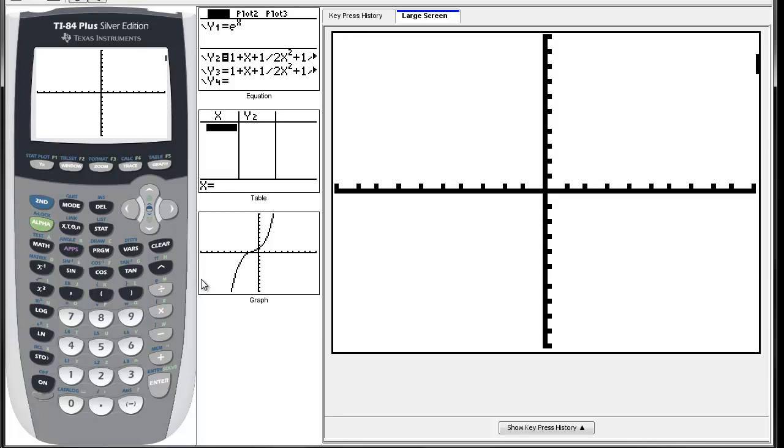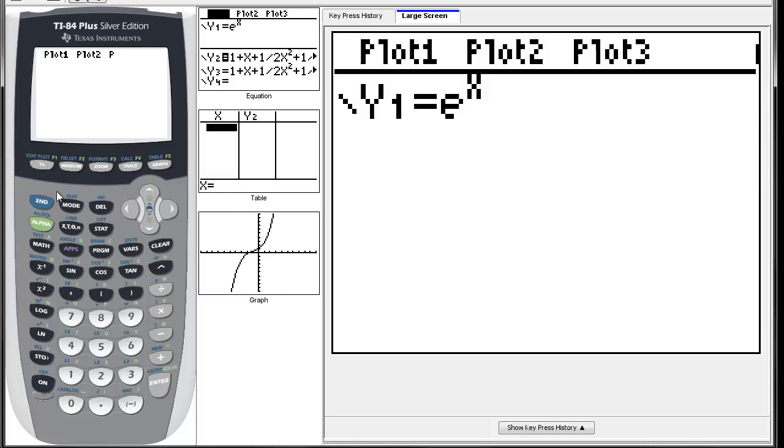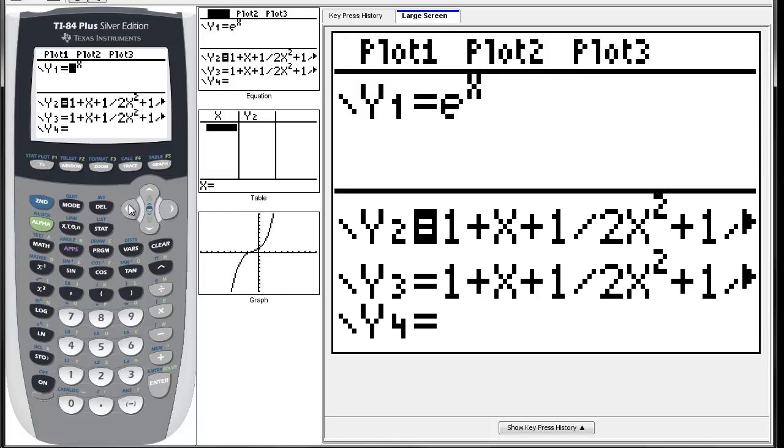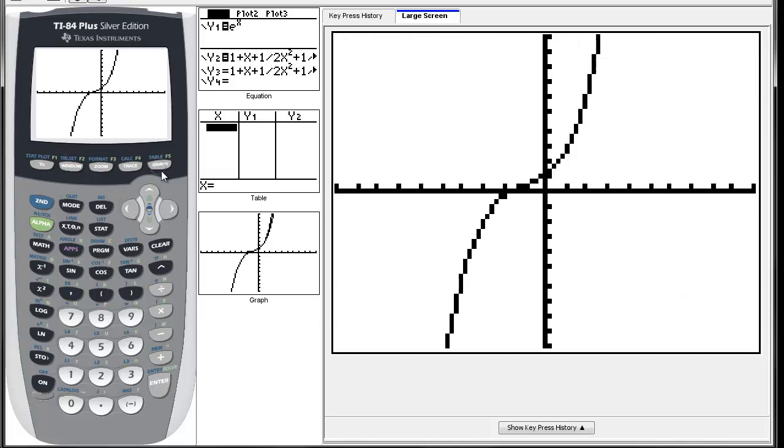I've entered it all the way up to n equals 3. If I graph that thing, this is that cubic polynomial I just found. Let's put e^x right on top of it. I'll turn e^x on and graph it.